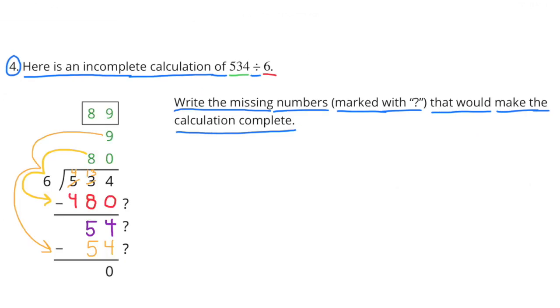Number 4. Here is an incomplete calculation of 534 divided by 6. Write the missing numbers marked with question marks that would make the calculation complete. 534 divided by 6. 80 times 6 is 480. 534 minus 480 equals 54. 9 times 6 equals 54, so 54 minus 54 equals 0.